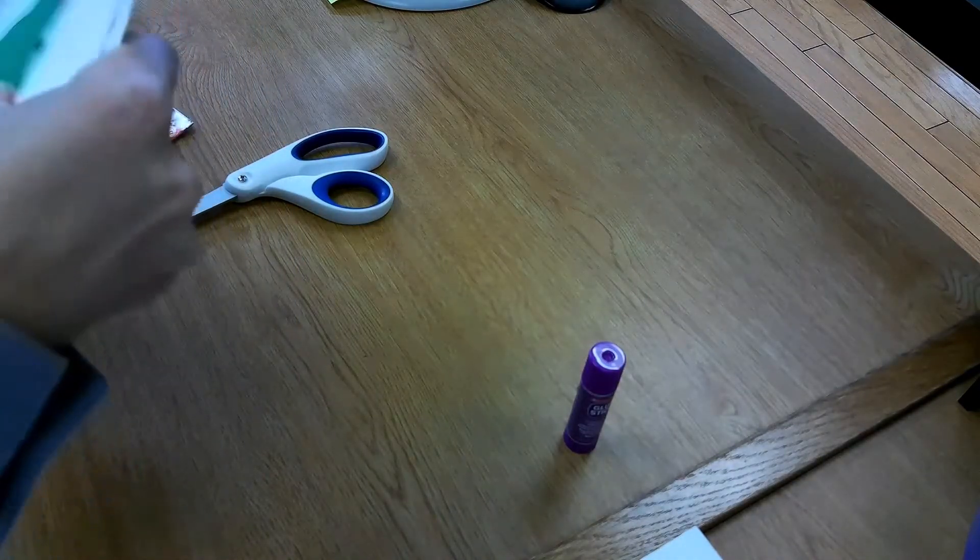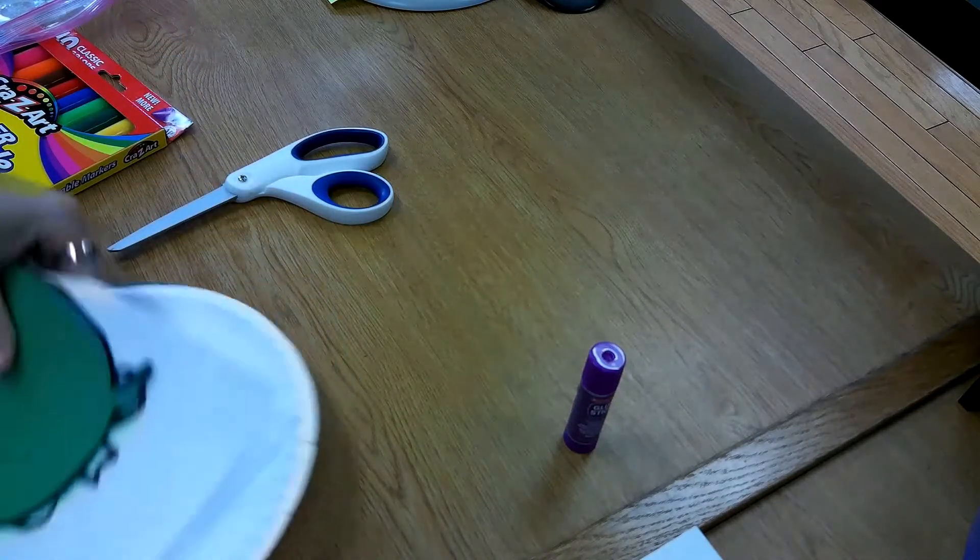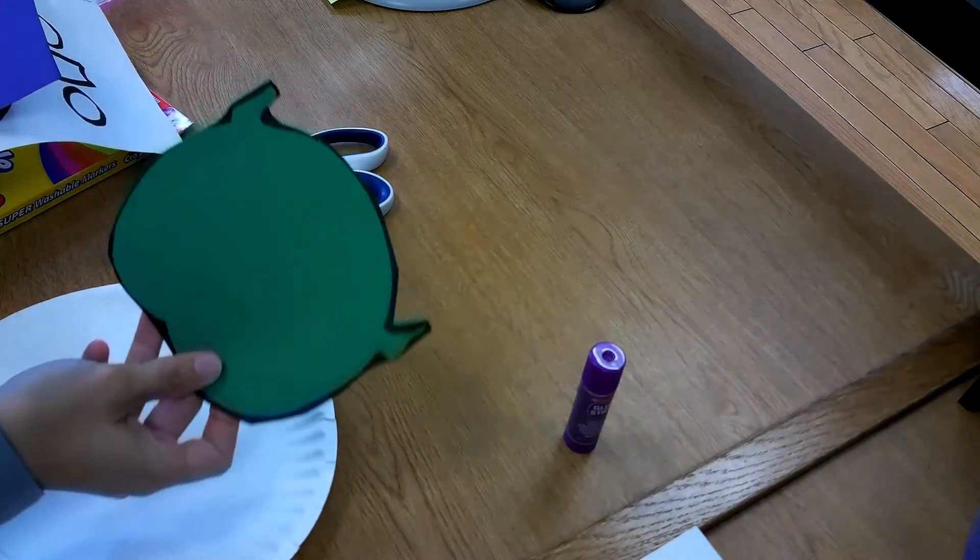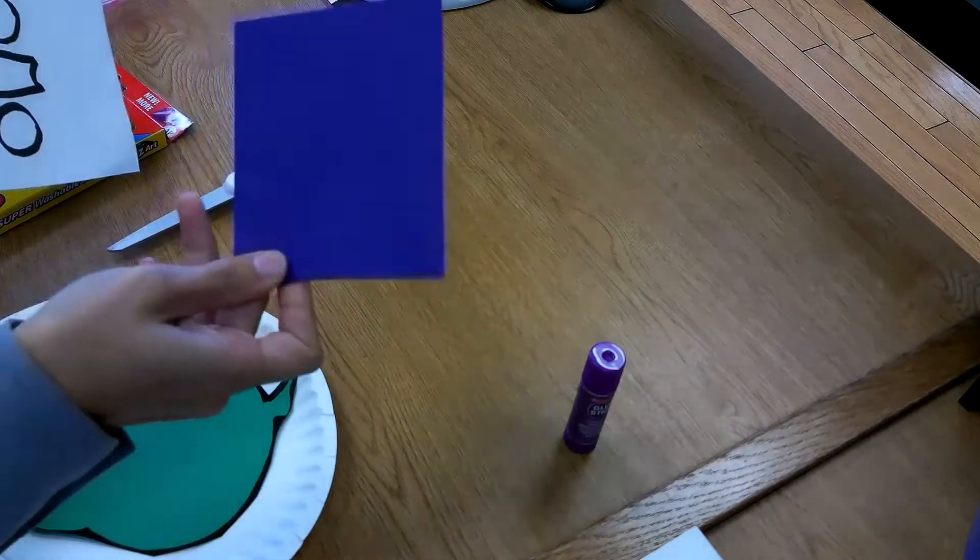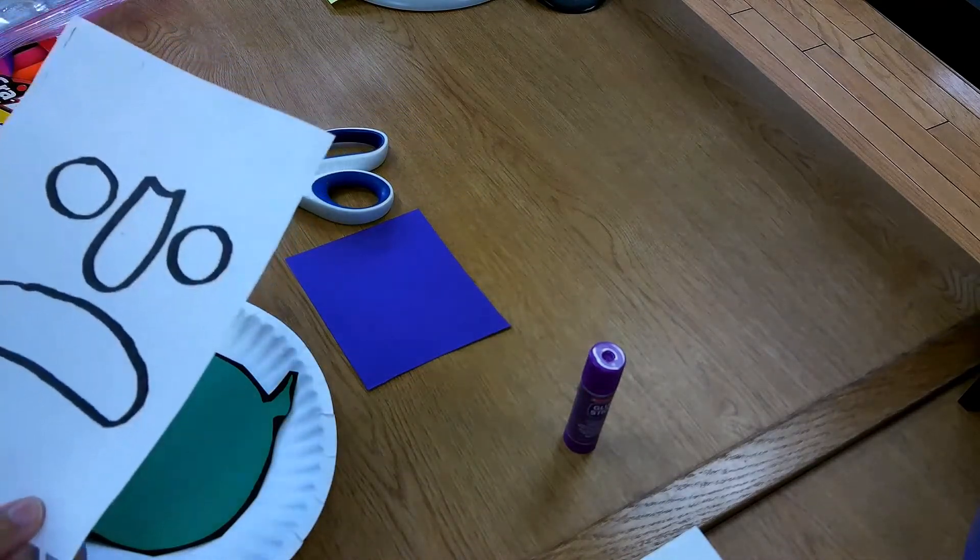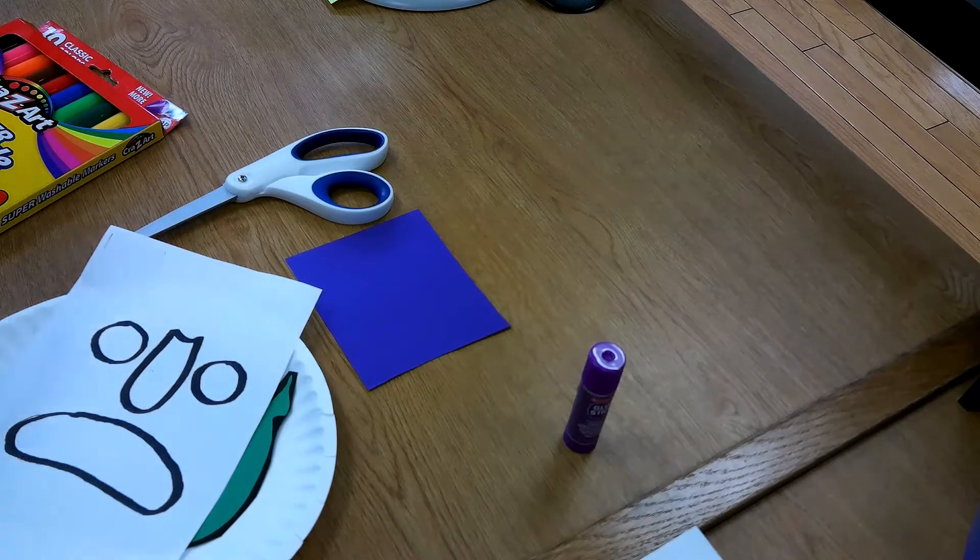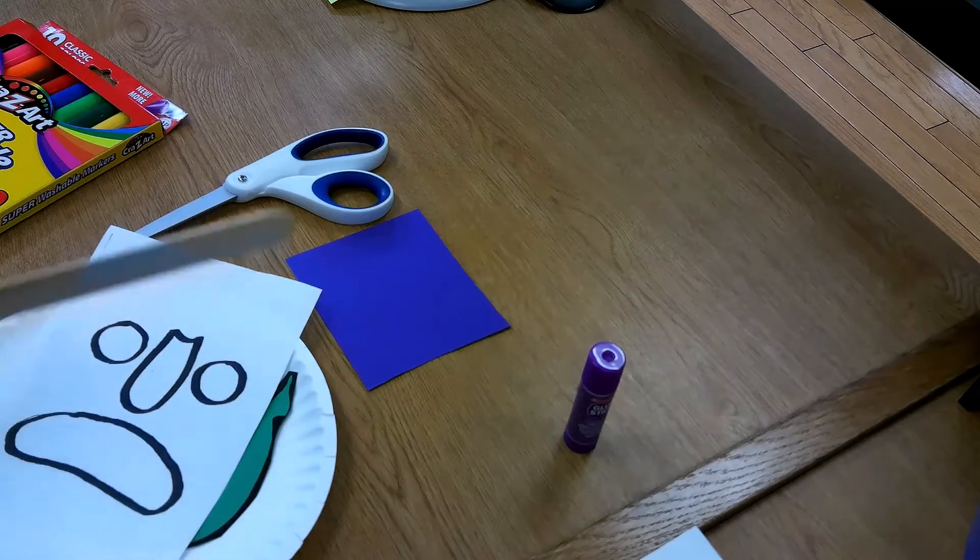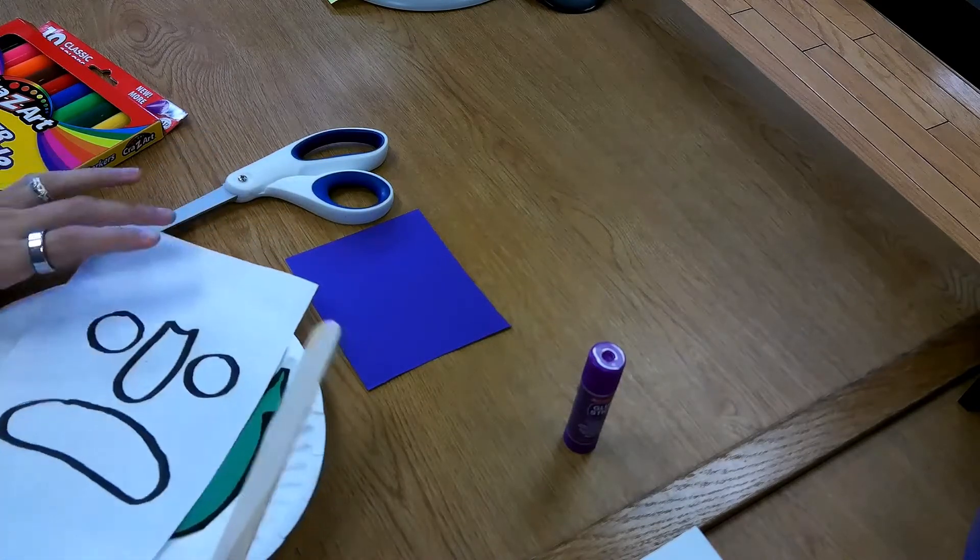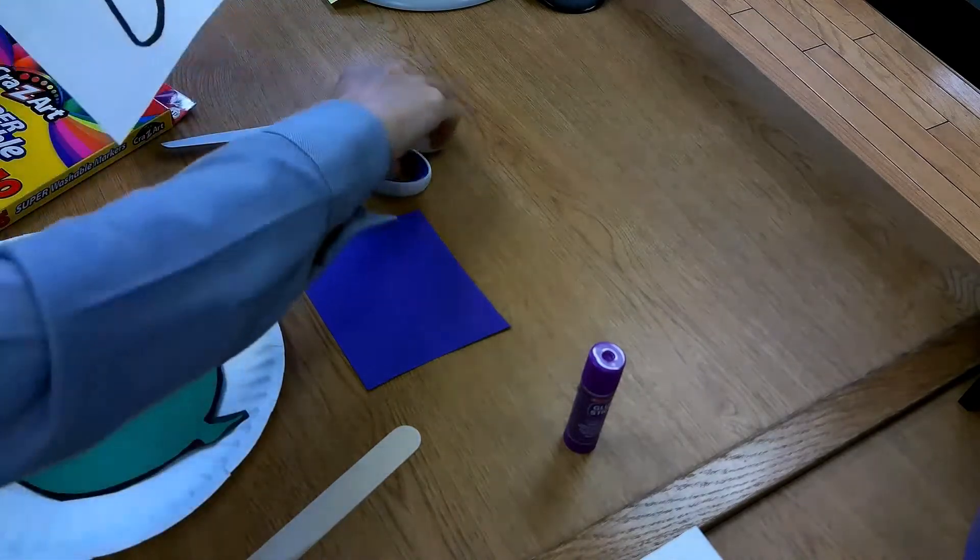And what we will need for this particular activity is our paper plate, our big green monster face, some purple paper, and some white paper with the template on it. You'll also want to have your big craft stick and that will be so that you can use this like a monster mask. So first we are going to cut out the facial features.